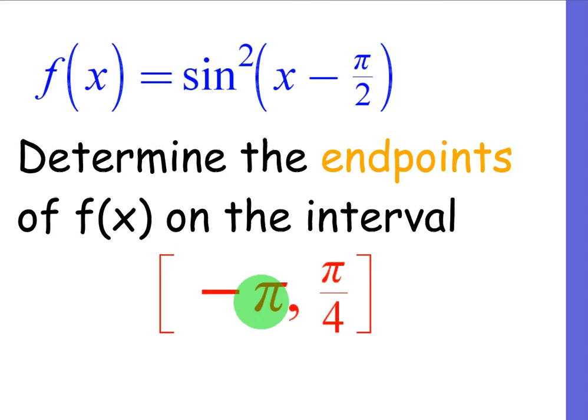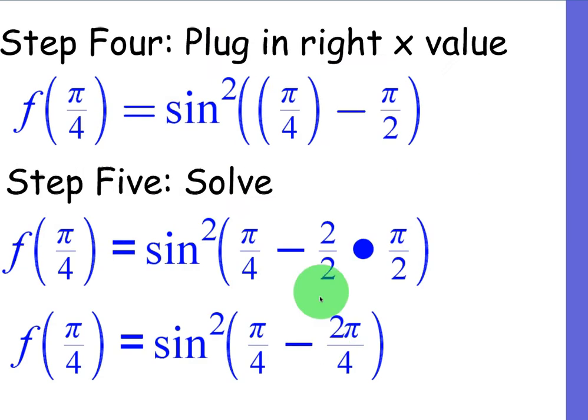Now our right x value was pi over 4, so we're going to plug that in for step four. Plug in your right x value, pi over 4. Now pi over 4 minus pi over 2, we need a common denominator, so it's going to be pi over 4 minus 2 pi over 4, same as pi over 2. You can see it's going to give you negative pi over 4. 1 minus 2 is negative 1.